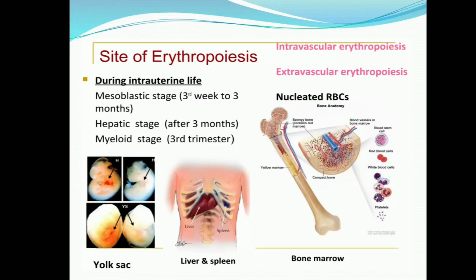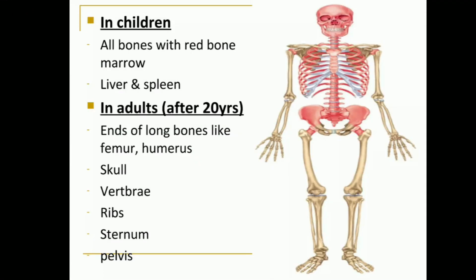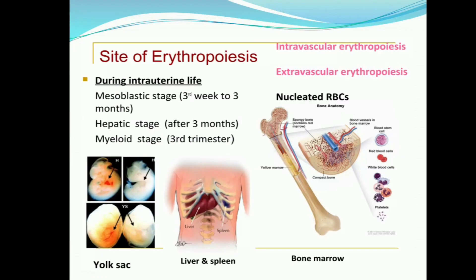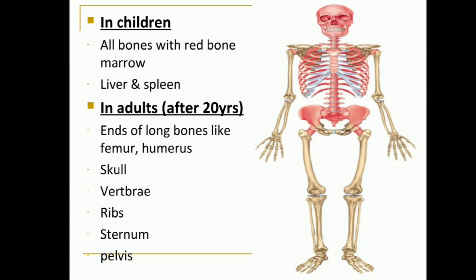The sites of erythropoiesis are divided into three main parts: during intrauterine life, in children, and in adults. During intrauterine life there are three stages: the mesoplastic stage from the third week to three months, the hepatic stage after three months, and the myeloid stage starting from the third trimester. In children, the sites include red bone marrow, liver, and spleen. In adults, it includes long bones, skull, vertebrae, ribs, sternum, and also liver and spleen.